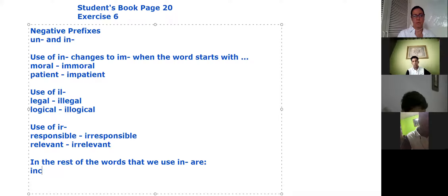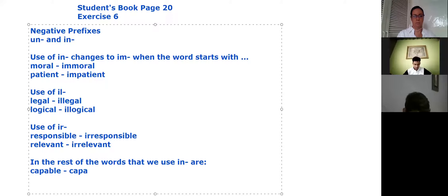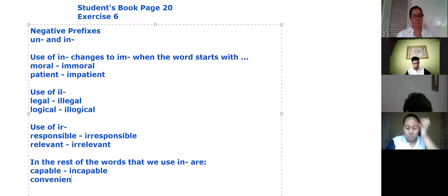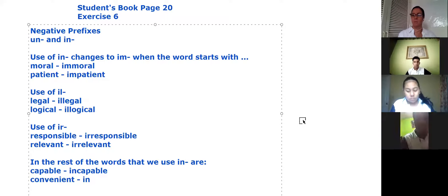Incapable, from the word capable to incapable. Convenience becomes inconvenient. So we change it from positive. What does the prefix do? It changes the word from being positive to being negative. That's what we use them for.